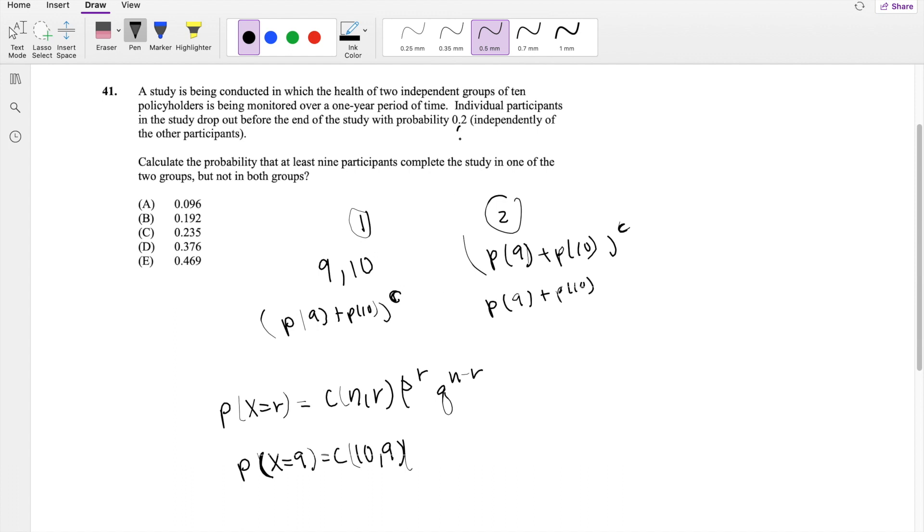And what is the probability that they complete the study? Well, if they drop out with a probability of 0.2, then the probability that they complete the study would just be 1 minus 0.2, which is 0.8. So they complete the study with probability of 0.8 and they drop out with a probability of 0.2.